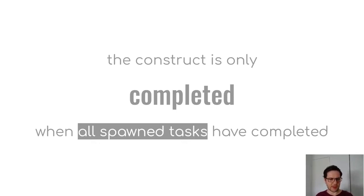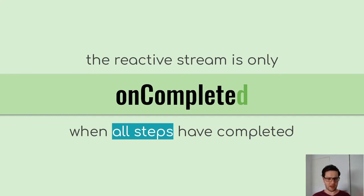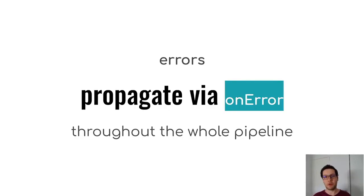In structured concurrency, the parent task never completes until all its child tasks have completed. It's the same in reactive streams, except it's represented by a dedicated signal — the onComplete signal. Data flows through the pipeline as onNext events, and until all processing steps are completed, you won't get an onComplete signal as the subscriber at the end of the chain. Errors propagate via the onError signal throughout the whole pipeline.